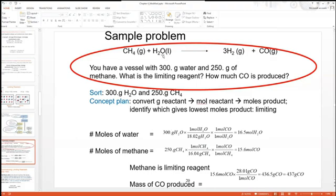First, we can calculate the moles. In this question, we have a vessel with 300 grams of water and 250 grams of methane: what is the limiting reagent? And also it asks how much CO is produced. We can use CO as our product that we're going to compare the values of. First, we figure out the moles of water and the moles of methane. We do that with this math. Then we can use the molar ratios to determine which one will produce the least amount of product.